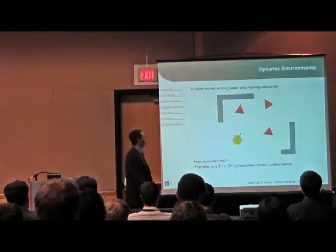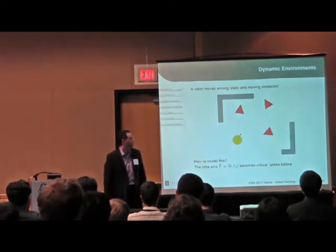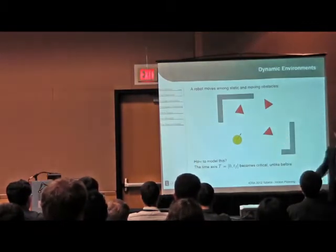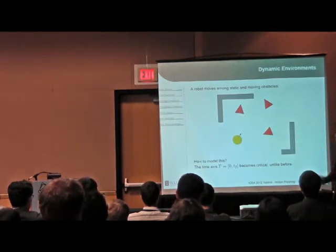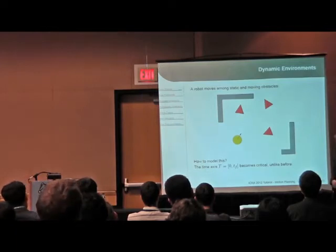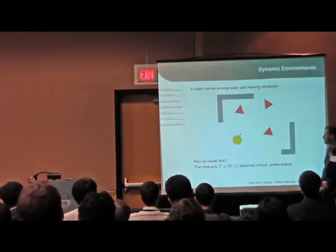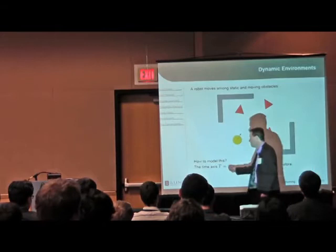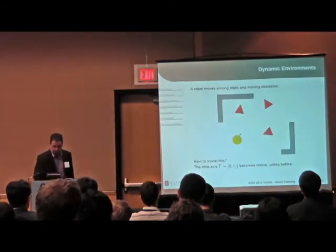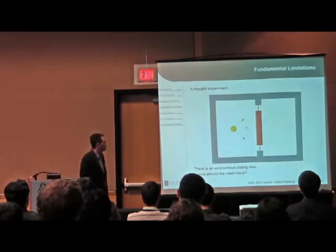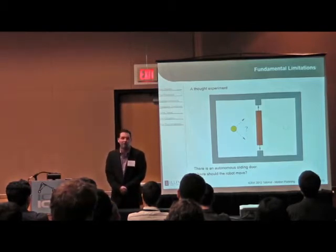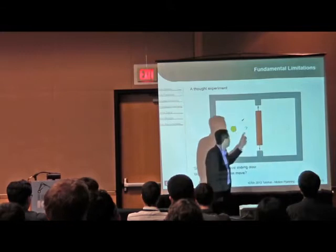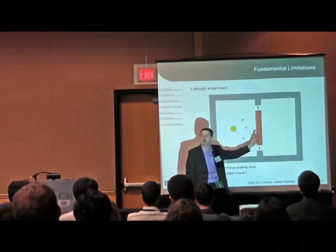Let's think about a robot moving among static obstacles — the dark blue polygons here — and some moving obstacles, like the red triangles moving around. I want to think about how to model this. One of the first things that becomes important immediately is the time axis: if obstacles are moving over time, time parameters start coming in. The 'terrible t' we referred to last time becomes a lot more important now.